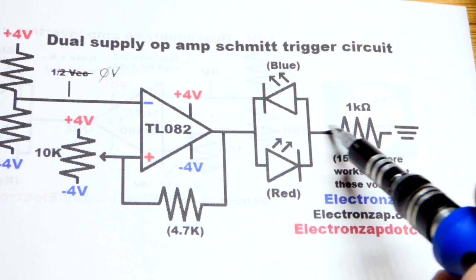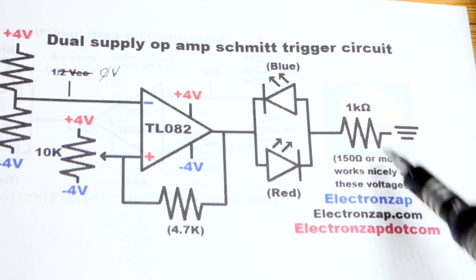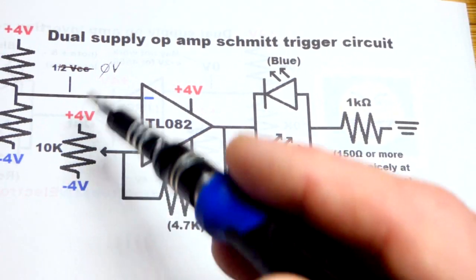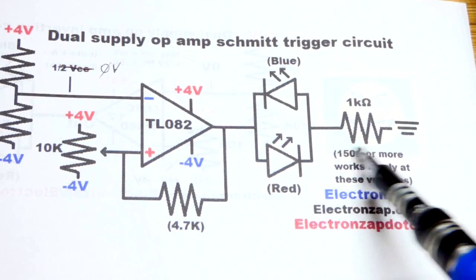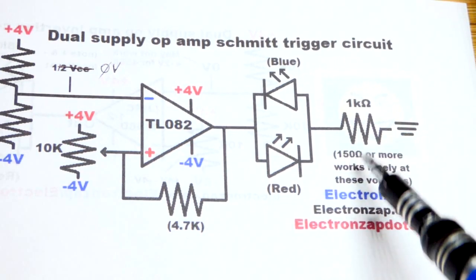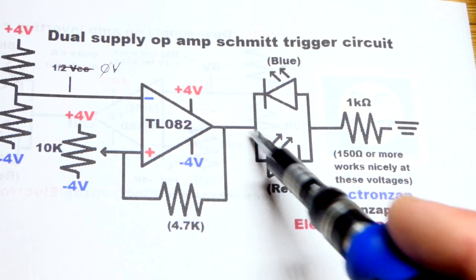When the output is high, the red LED will light up. We'll use a one kiloohm resistor. Since we're only dealing with four volts, positive or negative, 150 ohm would work, the LEDs would be brighter, but we're just going to stick with the one kiloohm.